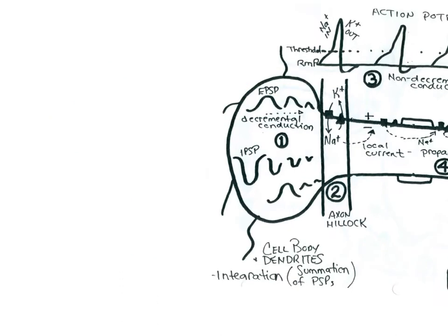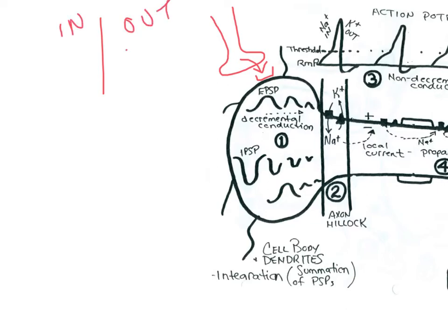A stimulus from a presynaptic cell has released a neurotransmitter that crossed the synapse, bound to a receptor on the postsynaptic membrane, and this is going to alter a chemically gated channel. For example, if it was a chemically gated sodium channel, we know that sodium is higher on the outside, so sodium would move in and that would result in a depolarization of the cell.